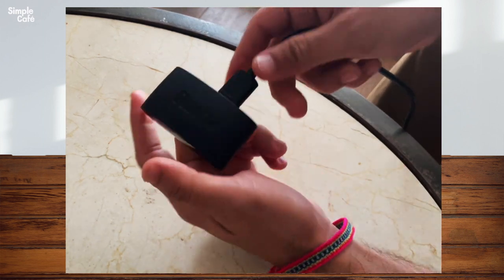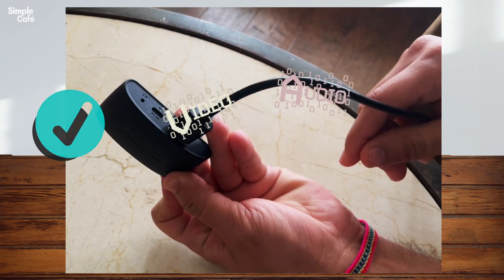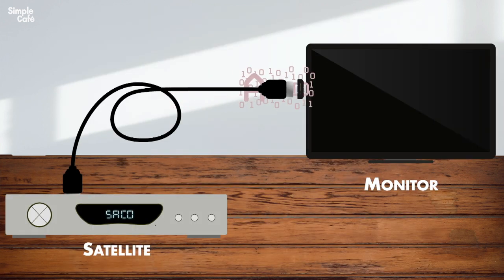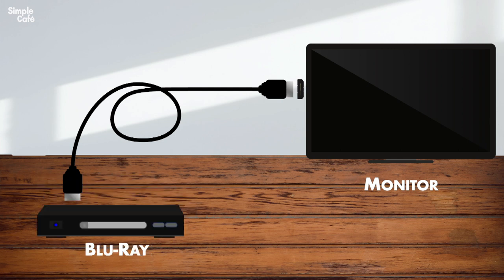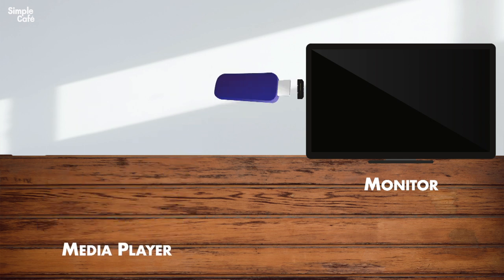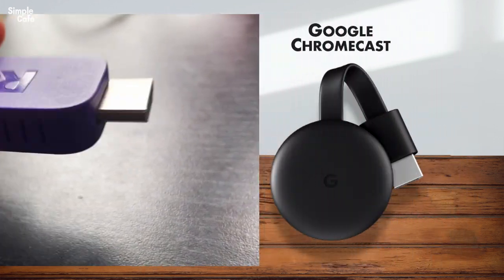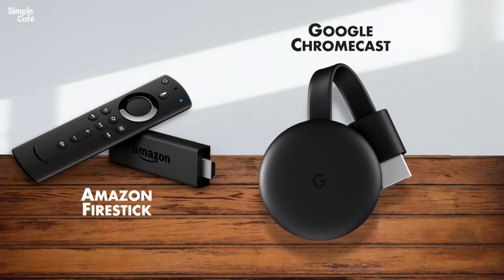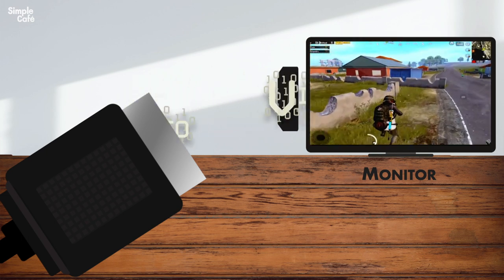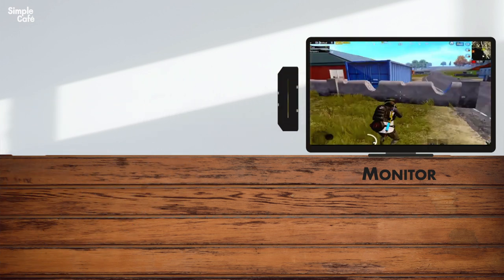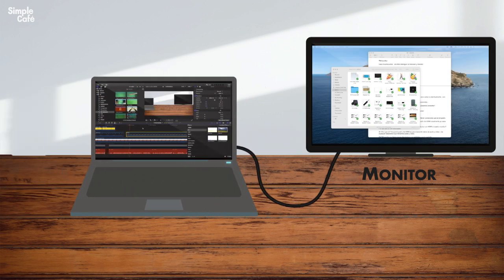The answer is absolutely yes, because HDMI is made to send audio and video data. That source of data is the same from a satellite device, a video game console, a Blu-ray player, or a portable media player like this one — which has HDMI nicely integrated — as well as a Google Chromecast and an Amazon Fire Stick. Your display has no excuse to not display the video data coming from that HDMI cable. As long as the data is audio and video, it's going to display it just like it does from your computer.